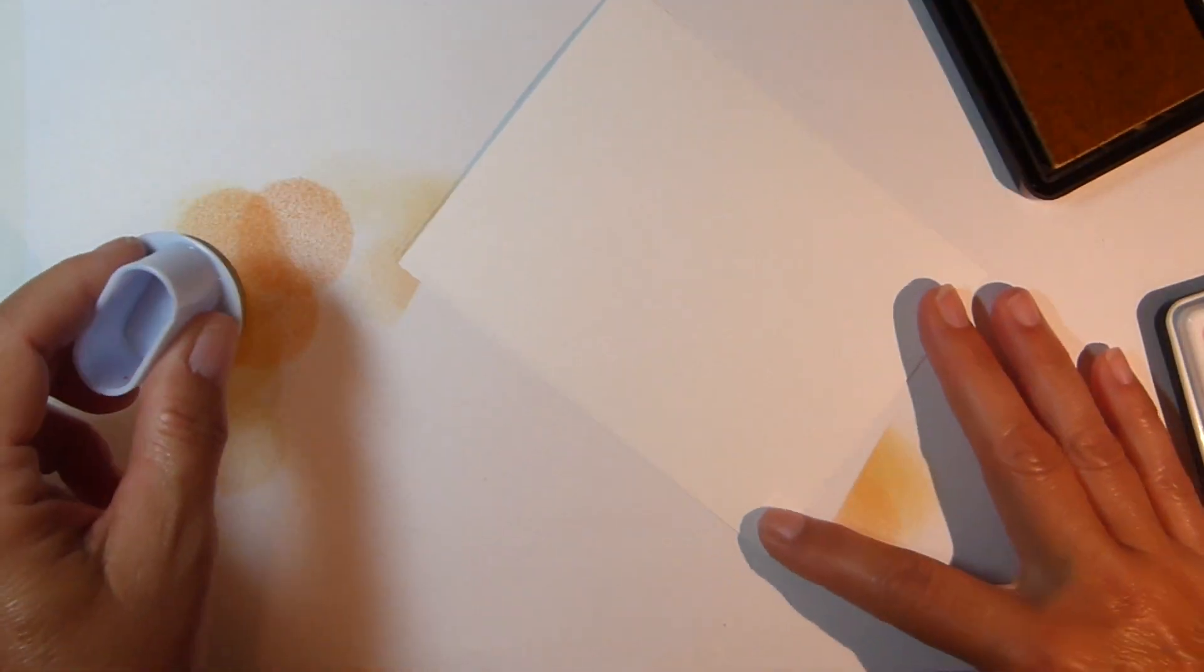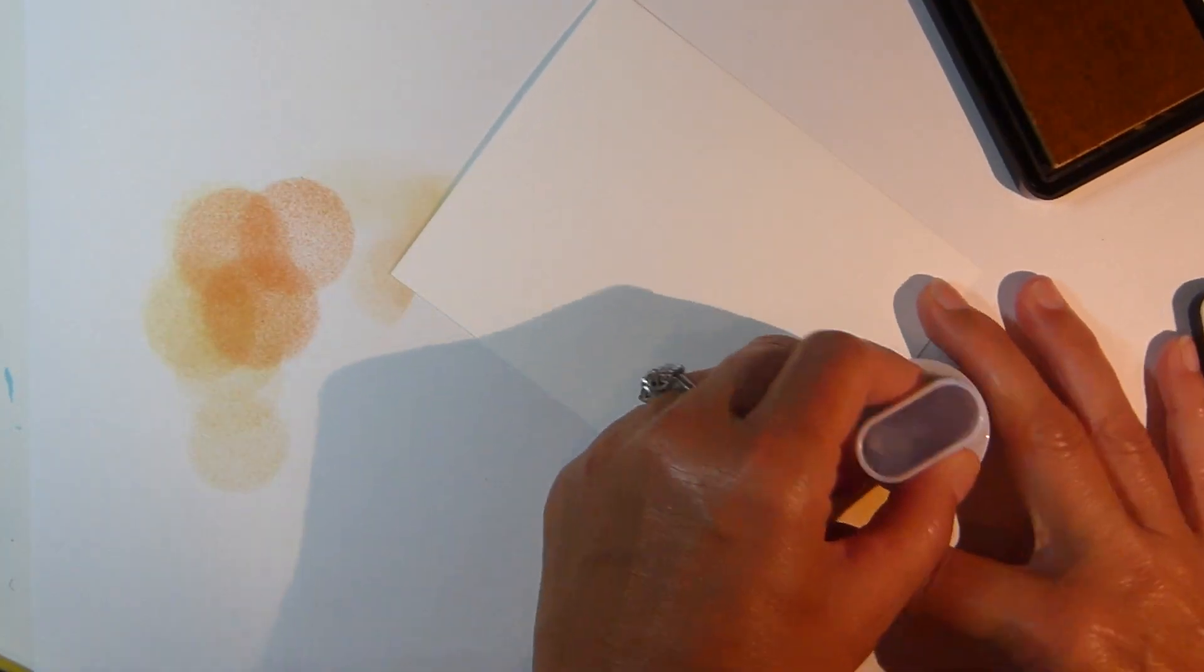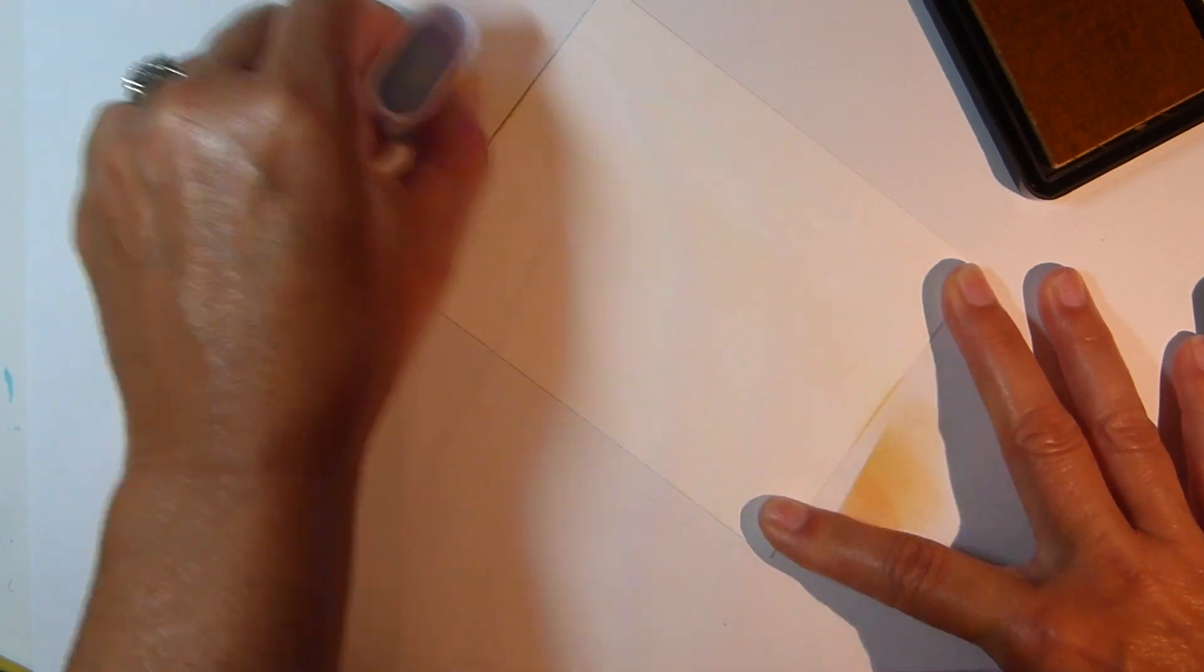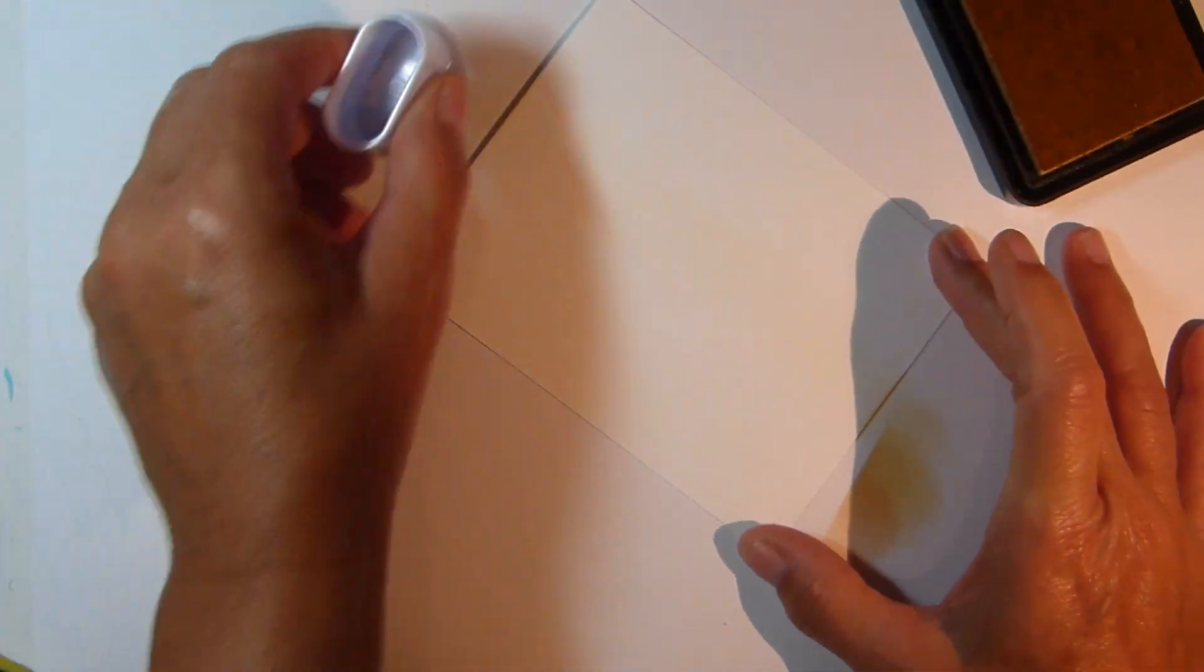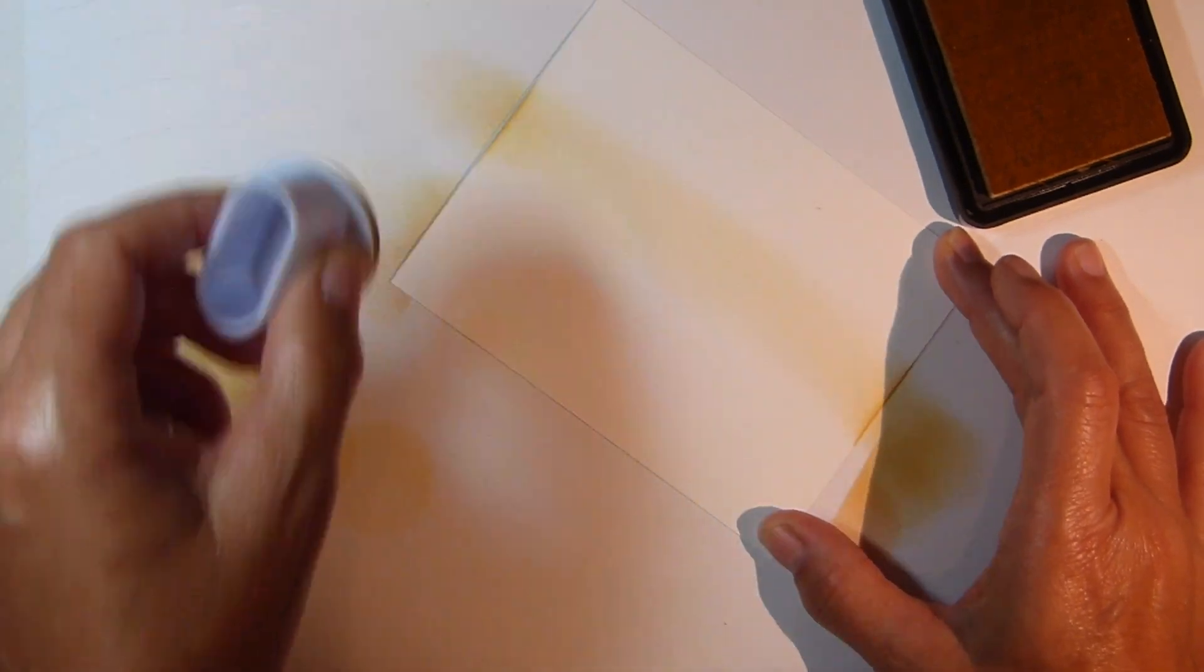Start with a piece of white cardstock trimmed to four by five and a quarter inches and then swipe using your jumbo sponge dauber and Gina K Sweet Corn ink from side to side. Try to keep your sponge dauber off the cardstock as you start your swipe and then just bring it across back and forth. You'll find that the color's a little darker on the edges and lighter toward the center.